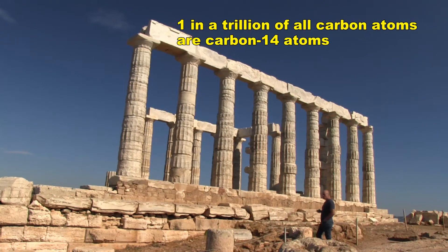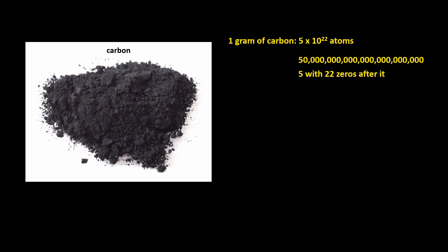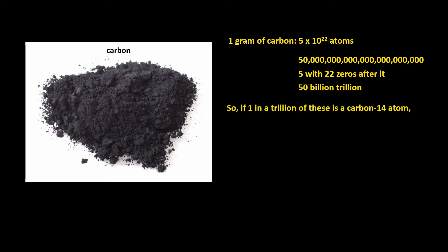You may think that 1 in a trillion isn't many, but let's look at some numbers. Each gram of carbon — all three isotopes — consists of 5 times 10 to the 22 carbon atoms, which is a 5 with 22 zeros after it, or 50 billion trillion. So if 1 in a trillion of these is a carbon-14 atom, that's still 50 billion carbon-14 atoms.